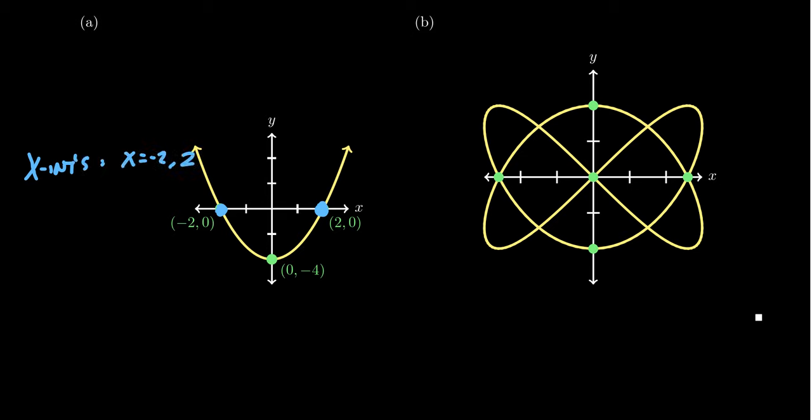You don't tell me the y-coordinate of an x-intercept because the y-coordinate of an x-intercept will always be zero. Since the point is on the x-axis, the y-coordinate has to be zero in that situation.